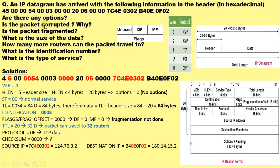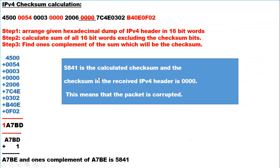Now let us check whether the packet is corrupted from the checksum calculation. To calculate the checksum, you need to arrange the given hexadecimal dump in 16-bit words. After arranging the data in 16-bit words, calculate the sum of all 16-bit words excluding the checksum field bits. Then find the one's complement of the sum, which will be the checksum.